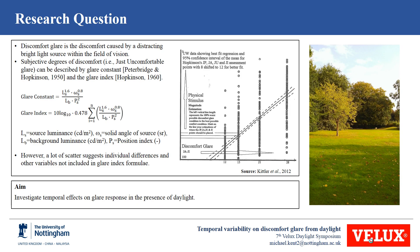In the scientific literature, discomfort glare is defined as a source of distraction or annoyance caused by bright light sources or non-uniform sources within the field of vision of an observer. The symptoms related to discomfort glare usually range from mild irritation to visual fatigue, and in buildings will cause frequent use of blinds or adaptive responses in order to reduce the level of discomfort experienced.